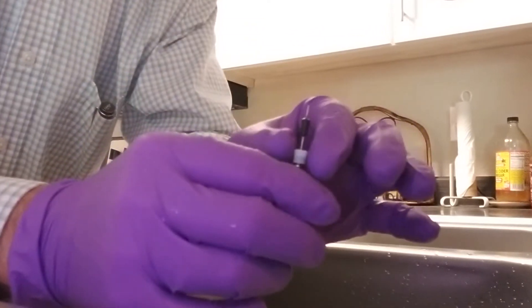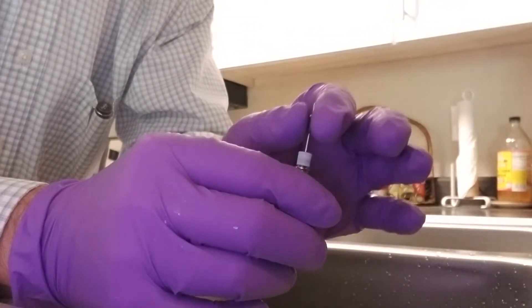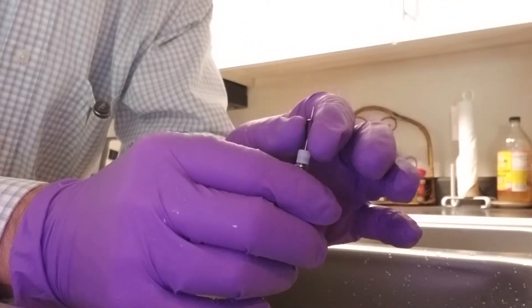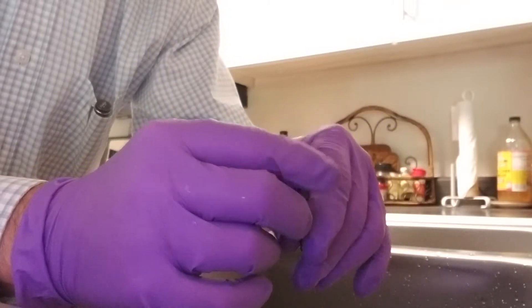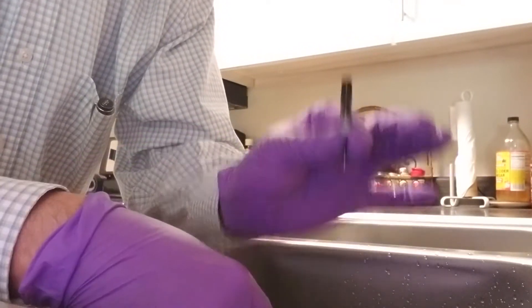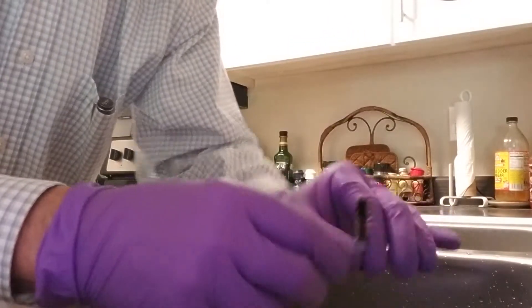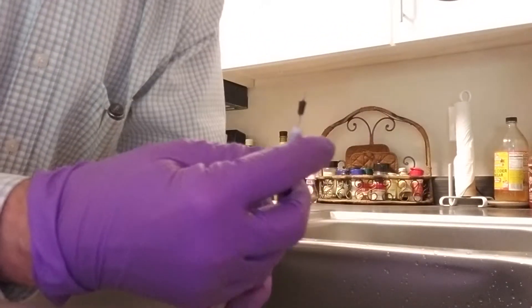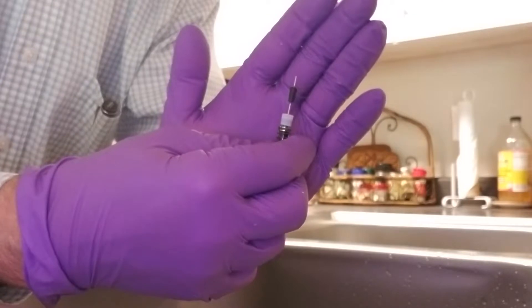Give it one more rinse by pulling the plunger up and down again under the running water. Invert it again, shake it out, dry it, and you're done.